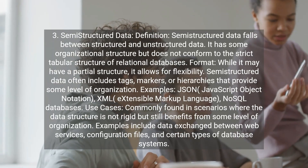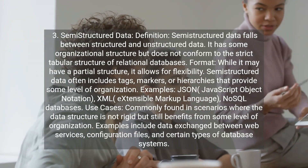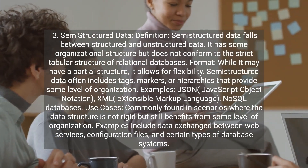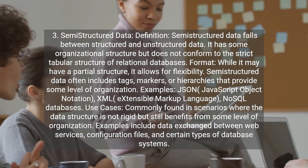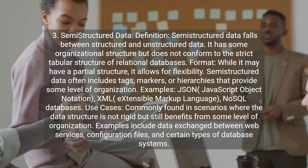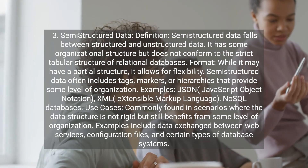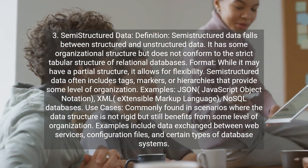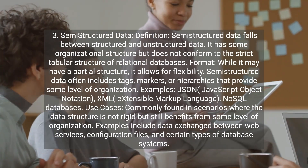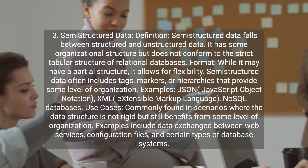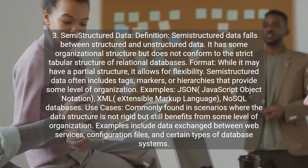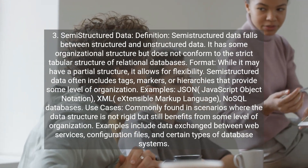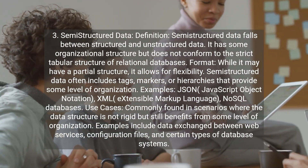3. Semi-structured Data: Semi-structured data falls between structured and unstructured data. It has some organizational structure but does not conform to the strict tabular structure of relational databases. While it may have a partial structure, it allows for flexibility. Semi-structured data often includes tags, markers, or hierarchies that provide some level of organization.